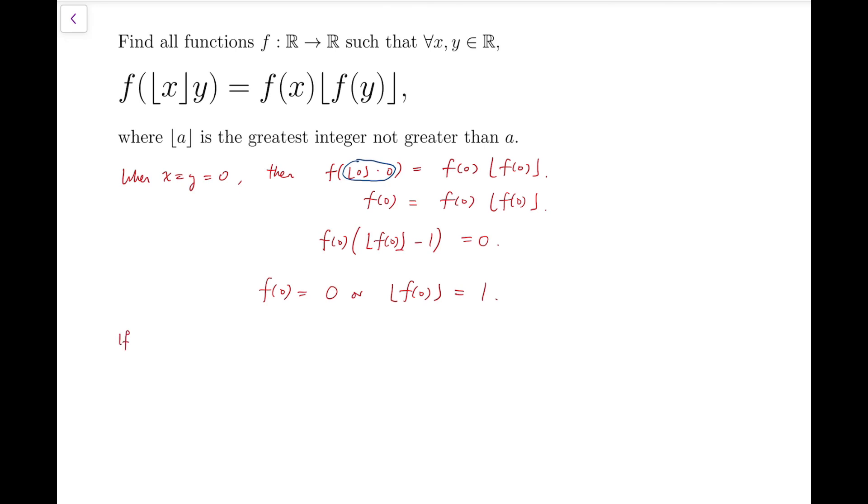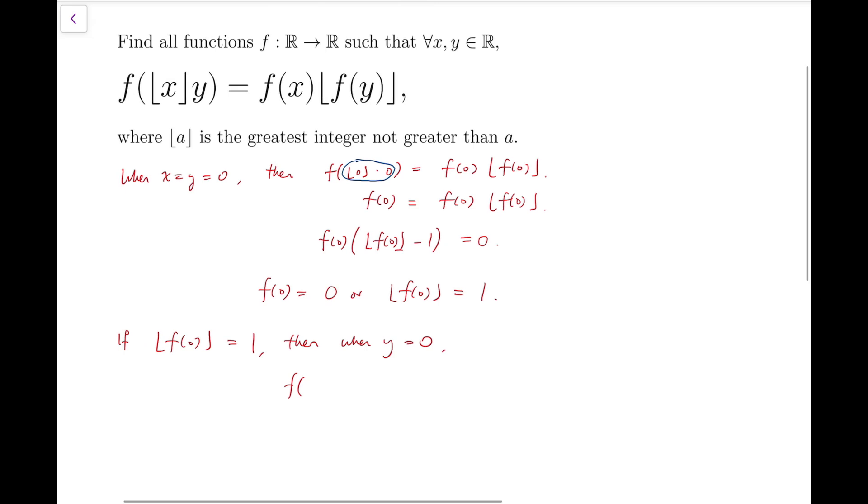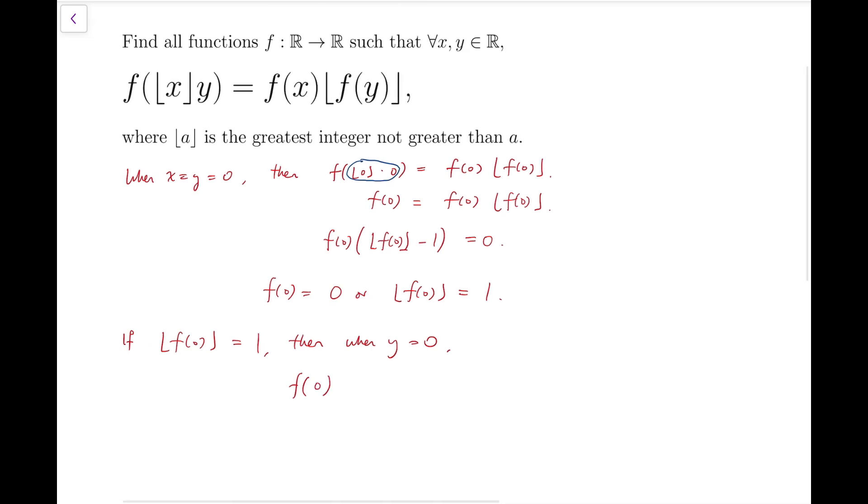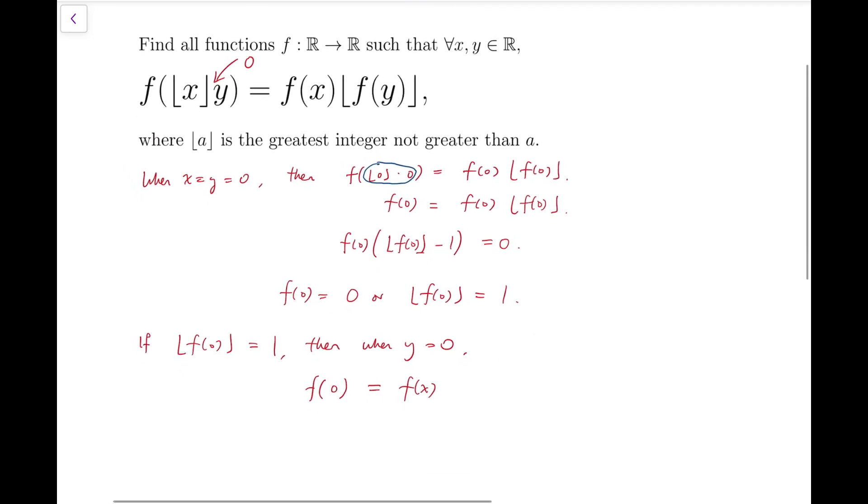Now I'm going to divide into two cases. The first one is that if the floor function of f of 0 equals 1, then I can simply put y equals 0. Then the left-hand side is exactly 0 again, because when this is 0, whatever the value of x is, when multiplied by 0, you get 0 inside the f. This equals f of x times the floor function of f of 0. Now from our assumption, we have this to be 1. So f of x is exactly f of 0, some constant that has an integral part equal to 1.